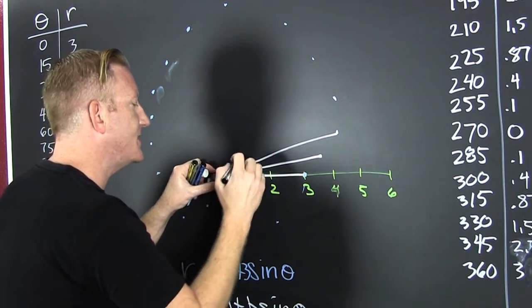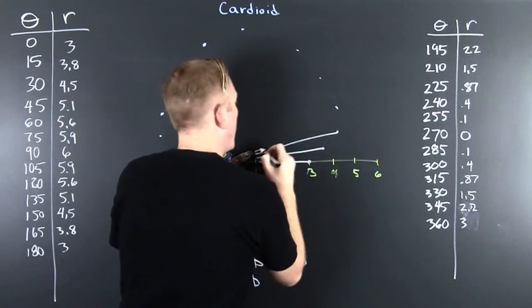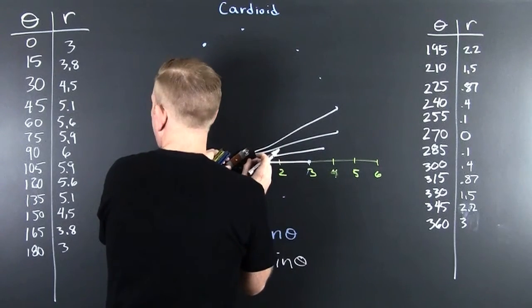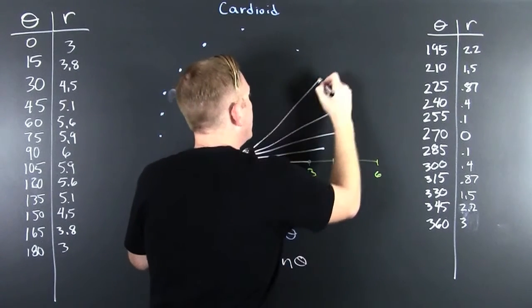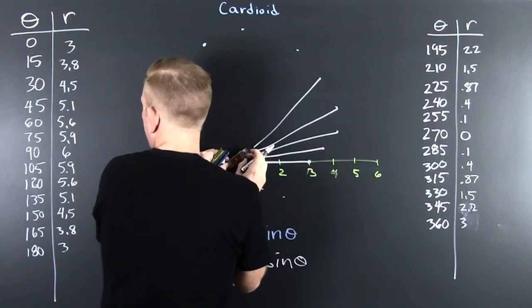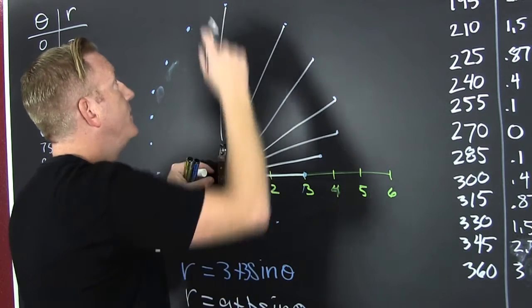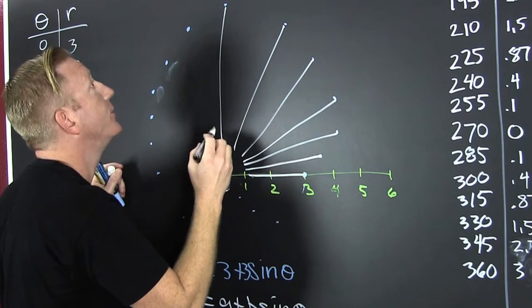That means we rotate 60 degrees and we go out 5.6. Then we rotate 75 degrees and we go out 5.9. Then we rotate. This is forming the ribs of our cardioid.